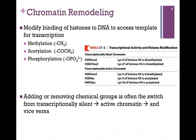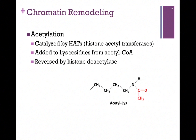One common way to remodel chromatin is acetylation, catalyzed by histone acetyltransferases or HATs. Typically that acetyl group is donated from acetyl CoA and added to a lysine side chain as illustrated here. Of course, if we have enzymes to add the groups, then we need an enzyme to remove the group — in this case a histone deacetylase.